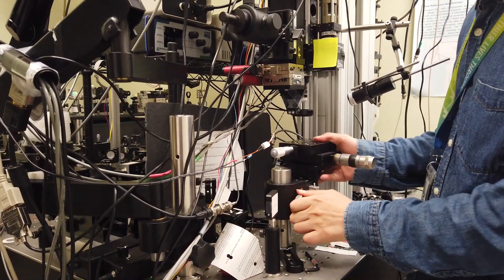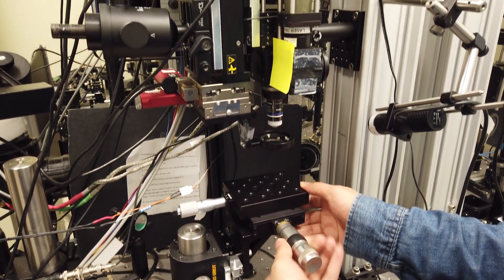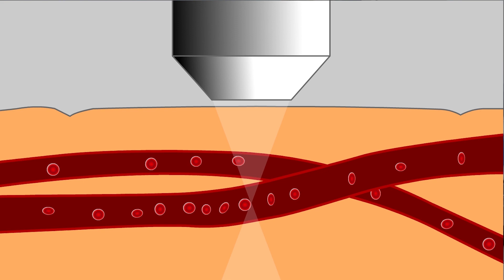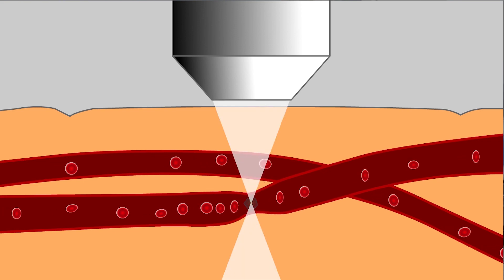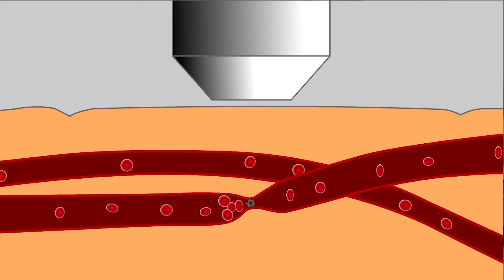We utilize the non-linear process of two-photon absorption, which has the advantage of restricted absorption at the focal point only. If you align the focal point with the microstructure, you can treat this microstructure very precisely without generating any adverse effect to the surrounding tissues.